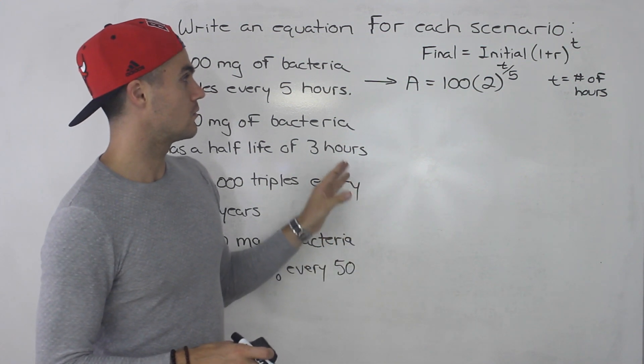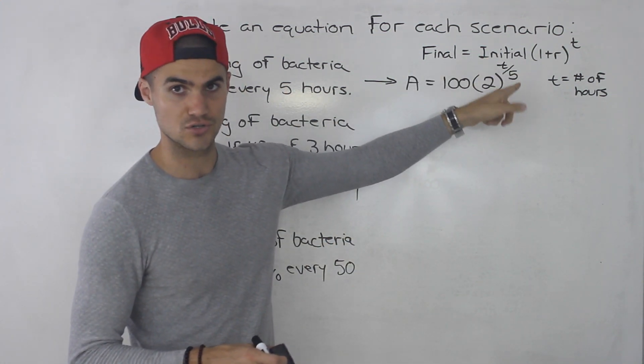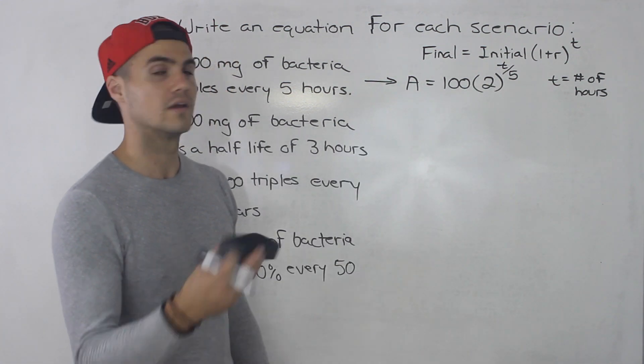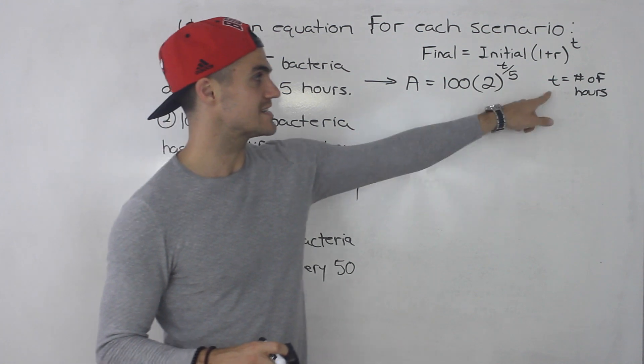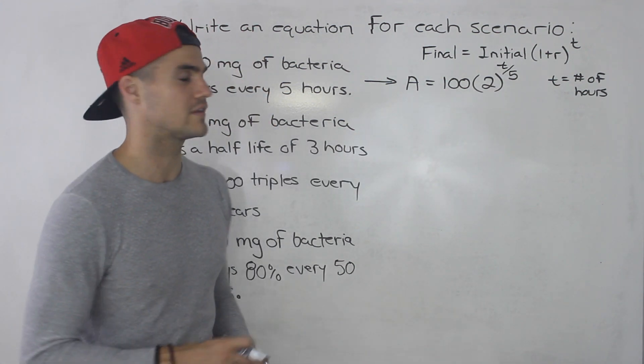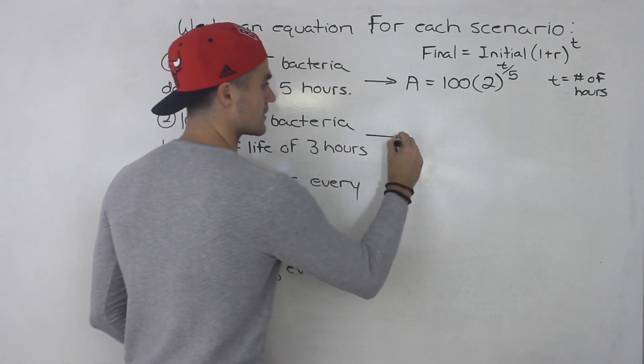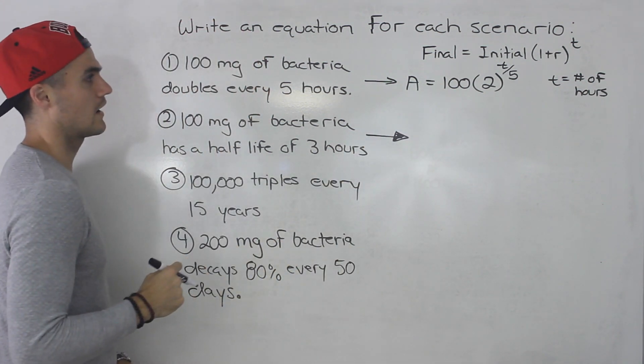Or when we get to 10 hours, if t is 10, 10 divided by five is two, two to the power of two is four. Keep doubling it every five hours. So if t is the number of hours, then we got to divide that exponent by five. Hopefully that makes sense.